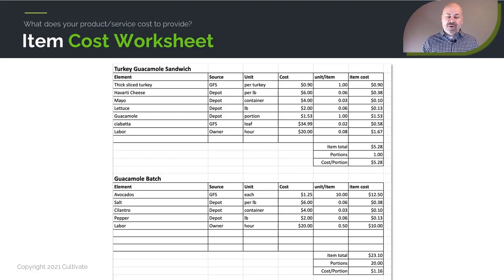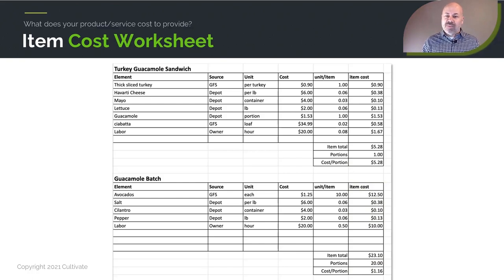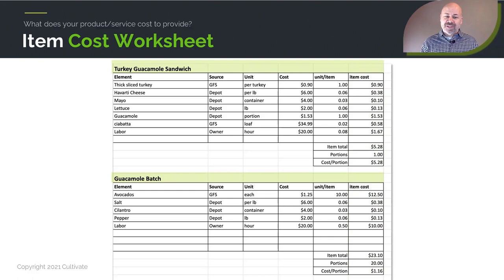Between these two different item costing examples — the sandwich and the guacamole portion produced in a batch — you can apply that to just about any kind of business to start figuring out how much it's going to cost to produce your product or service.